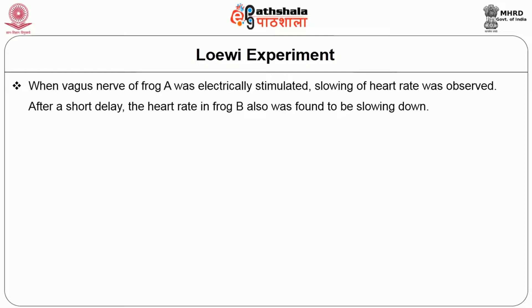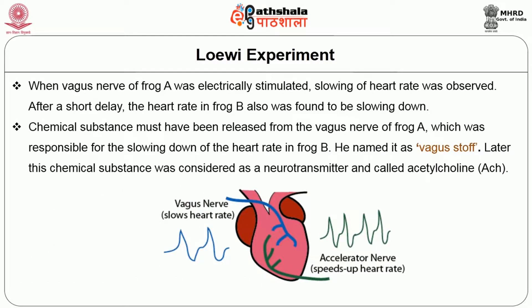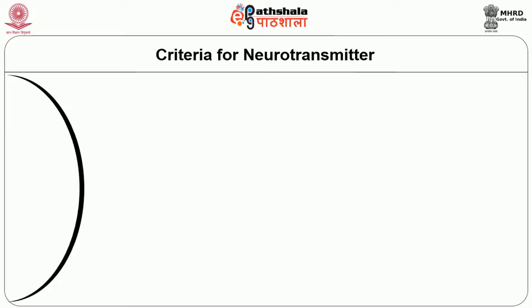After a short delay, the heart rate in frog B was also found to be slowing down. From this observation, Loewi speculated that some chemical substance must have been released from the vagus nerve of frog A, which was responsible for the slowing down of the heart rate in frog B. He named it 'Vagusstoff.' Later, this chemical substance was identified as a neurotransmitter and called acetylcholine.